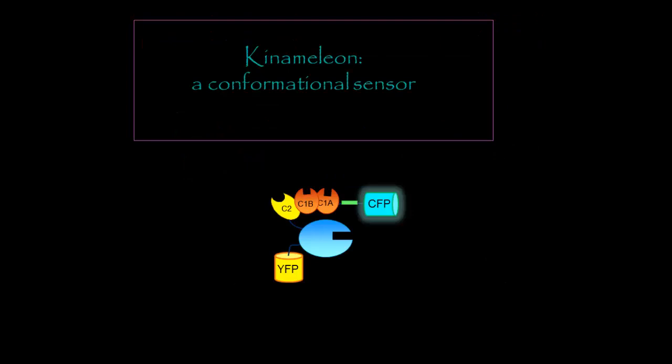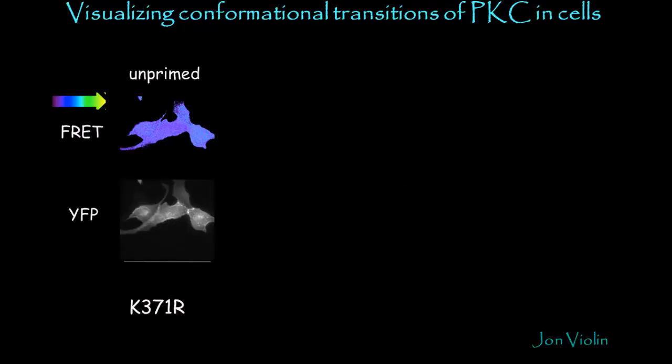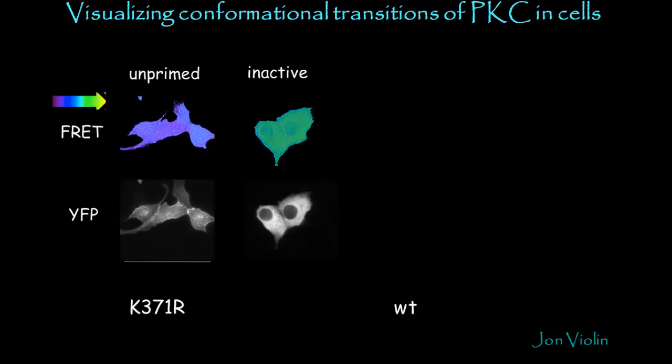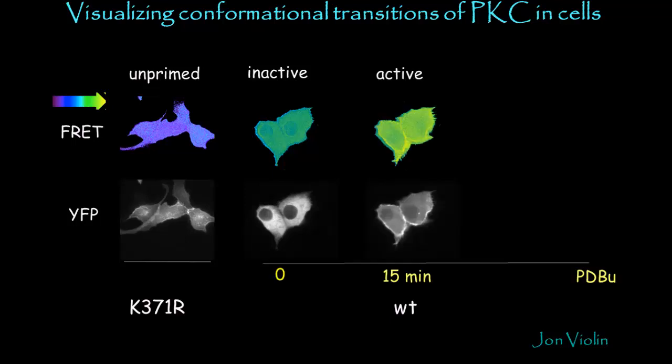We've looked at this conformational rearrangement by another approach: making C-kinase activity reporter (CKAR), a conformational sensor that has CFP and YFP flanking the amino and carboxy ends of the kinase. If we transfect cells with the catalytically inactive protein kinase C so that it can never be primed, we find low FRET. If we instead transfect in a wild-type enzyme that has not been activated — it's present primarily in the cytosol — we have higher FRET, so the C and N termini have come closer together. If we now add phorbol esters to activate this enzyme, it translocates to the membrane, and we have even greater FRET.